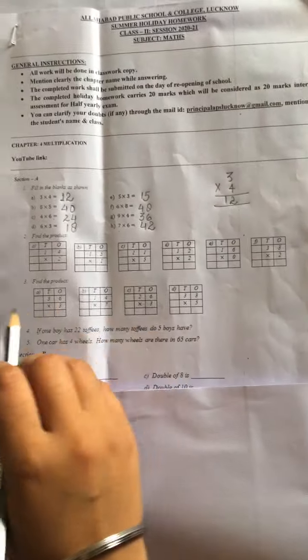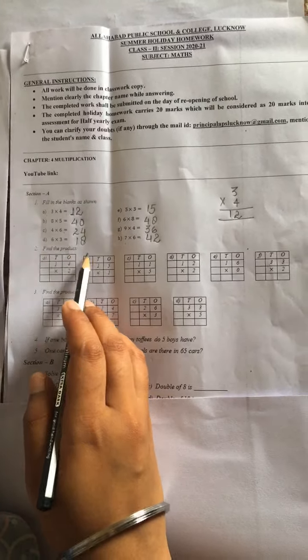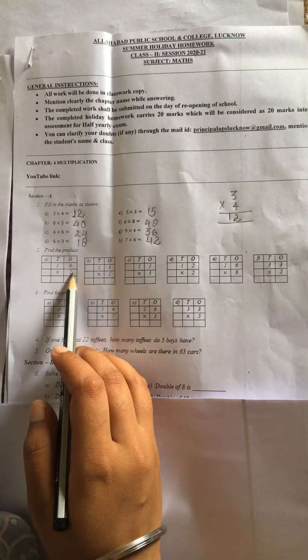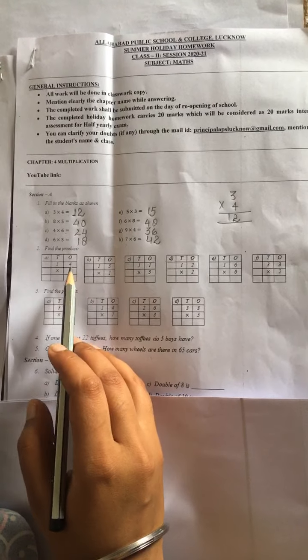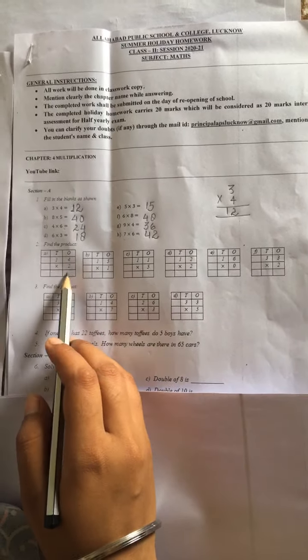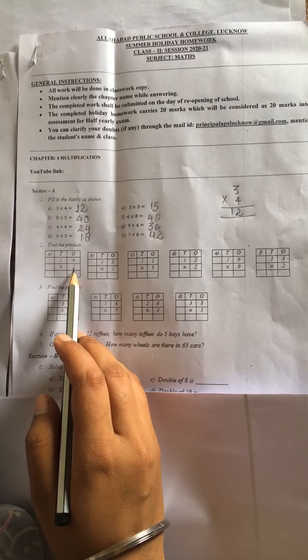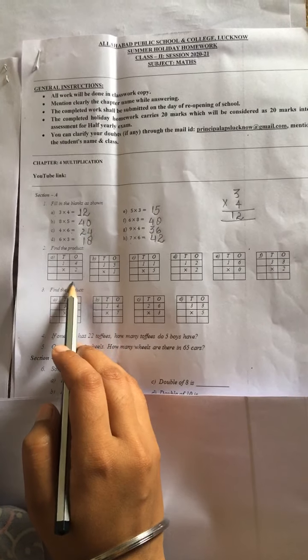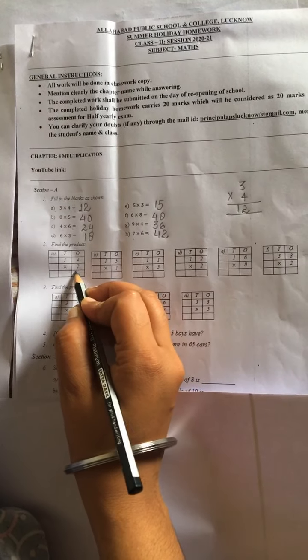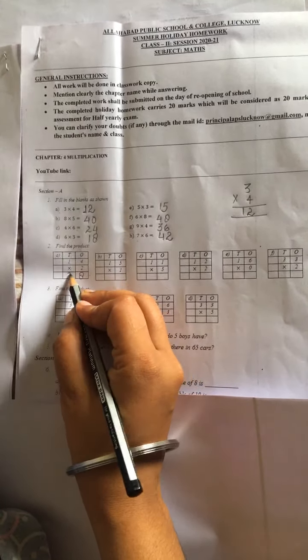Now come to the second question. Find the product. This is 14 multiply by 2. The 14, this is your multiplier. 2 is multiplicand. We have to find the product. So firstly, 2 ko 4 se multiply karenge, then 2 ko 1 se. So 2 times 4 is 8. 2 times 1 is 2.